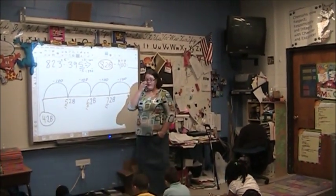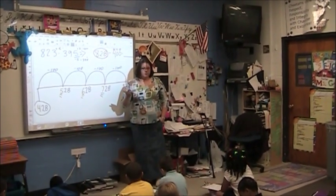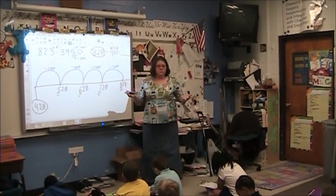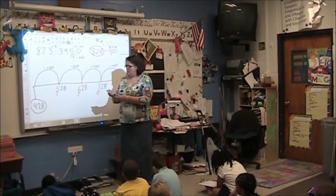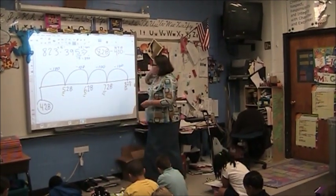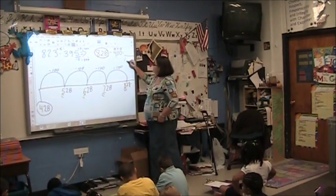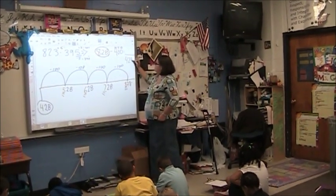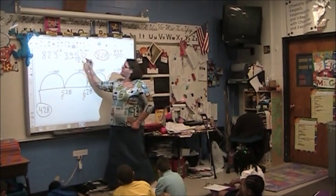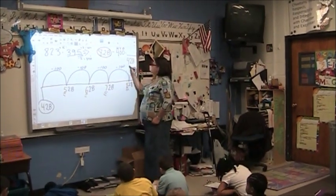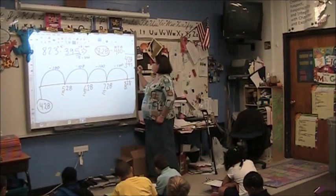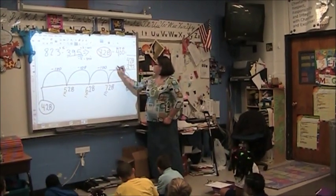How do I know that's correct? You check it. How? On partial sums — partial sums addition. So we've got four hundred and twenty-eight plus the original subtrahend, the original takeaway number, which is three hundreds, nine tens, and five ones.